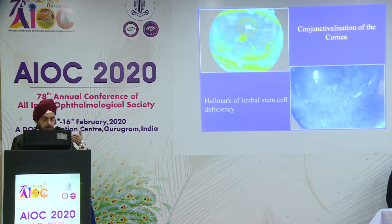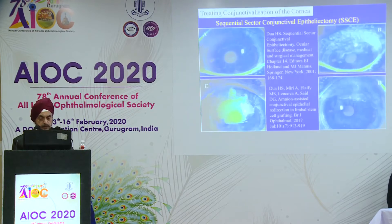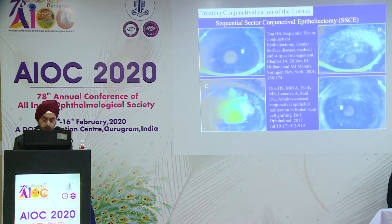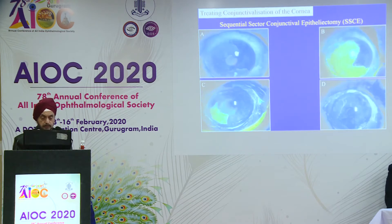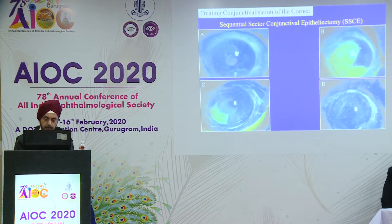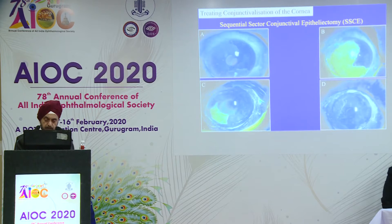That's called sequential sector conjunctival epitheliectomy. If the conjunctiva has already grown — and you can see late staining — you can scrape it all off and allow it to re-heal from below. That is a new line of junction of the conjunctival and corneal epithelium. Where the pupil is covered with corneal epithelium you get a good result. You scrape away all conjunctival epithelium, let the corneal epithelium grow, and you may have to keep scraping the conjunctiva until the corneal epithelium grows across the visual axis.